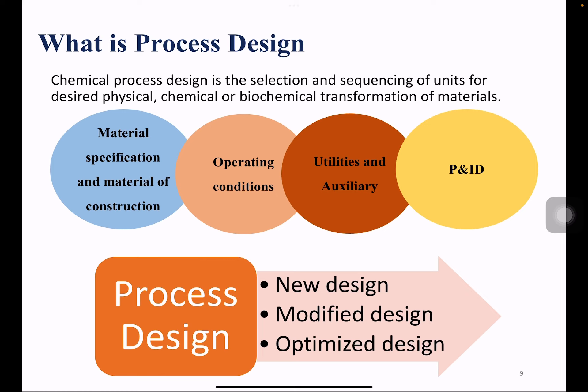Physical, chemical, or biochemical transformations can occur during the reaction stage. During the process design stage, you also do material specification — what type of material and material of construction to choose for your reactors. You identify operating conditions like temperature and pressure, and determine what utilities to use, such as saturated or superheated steam. The P&ID — piping and instrumentation diagram — is a very important aspect, representing the entire flow sheet including all process control.